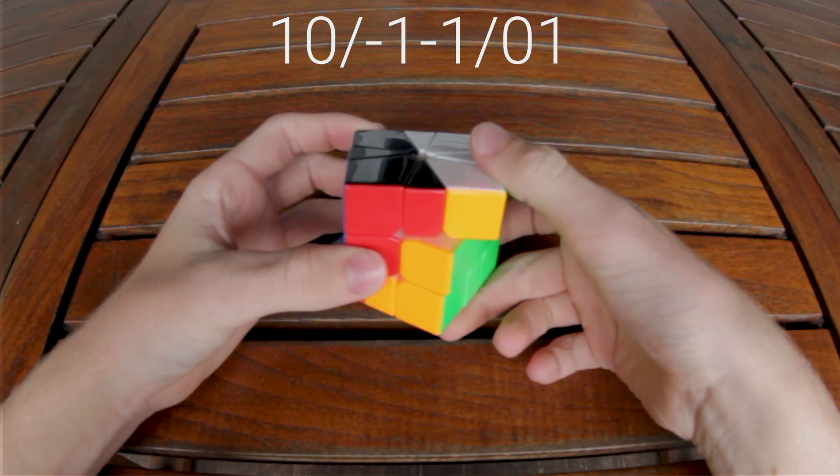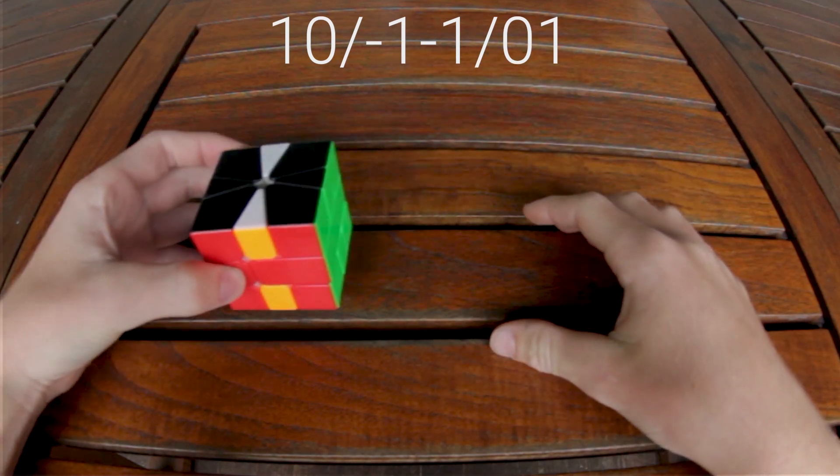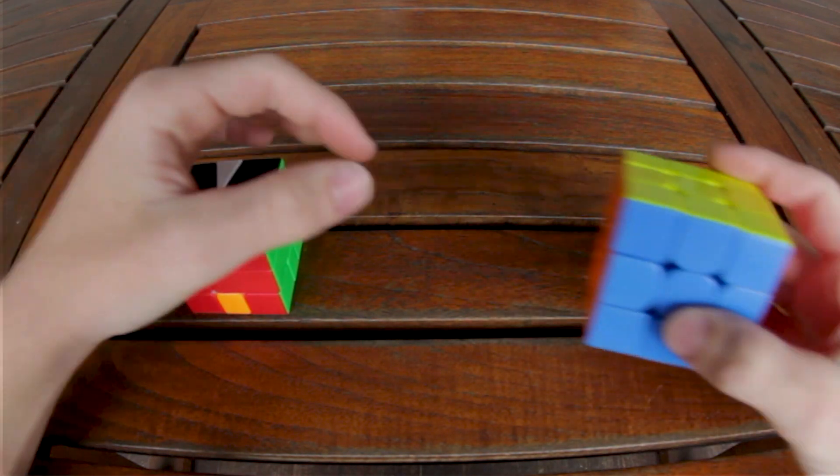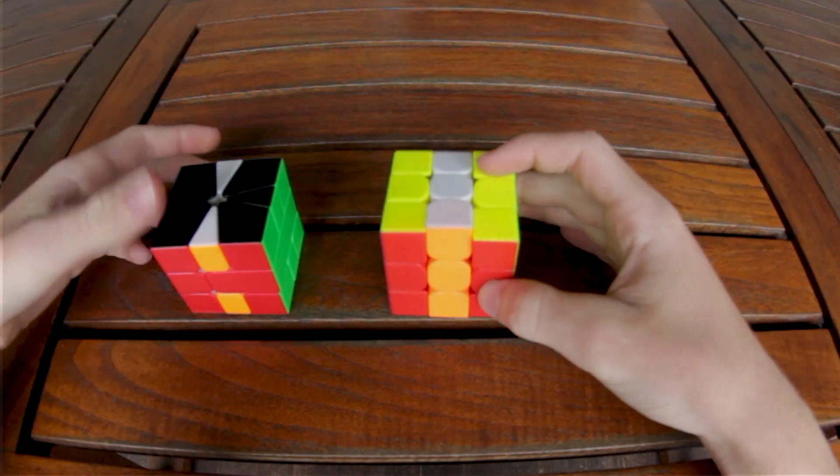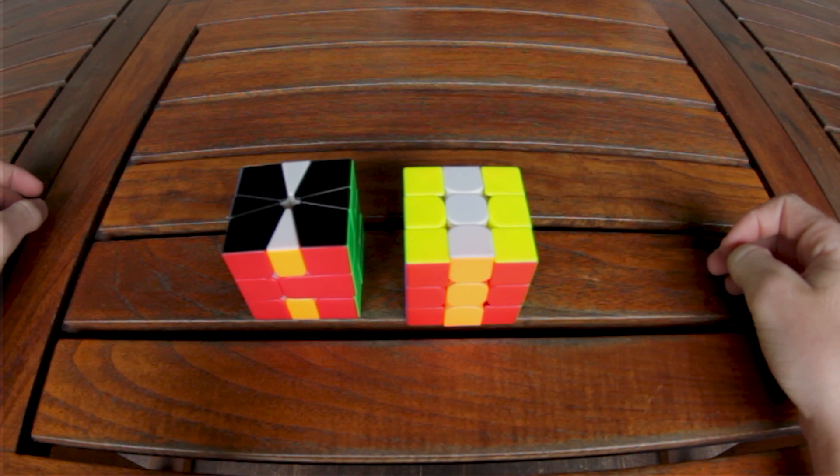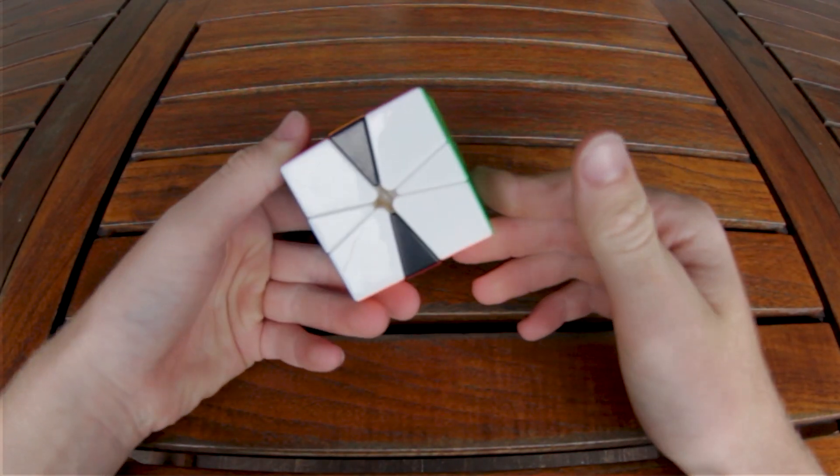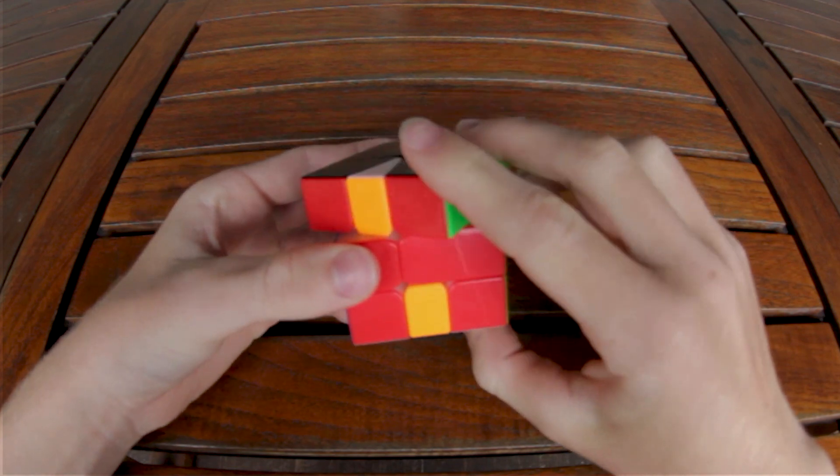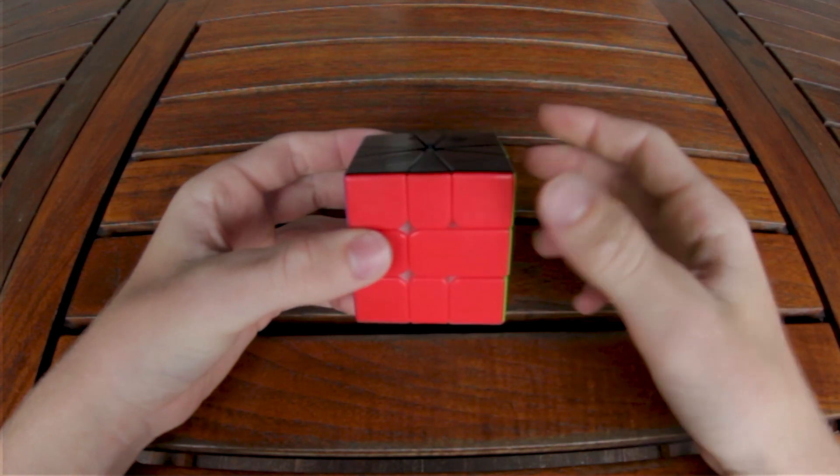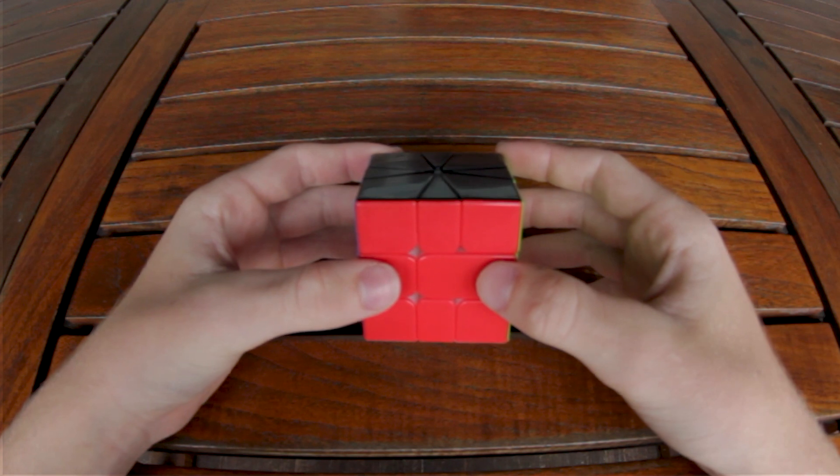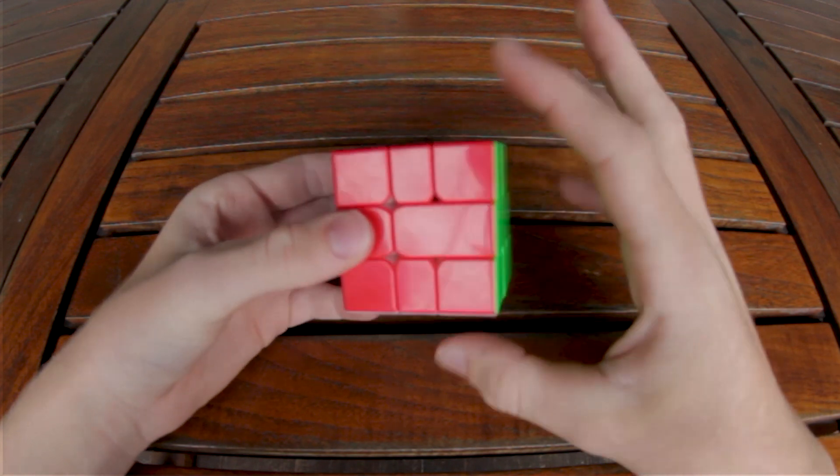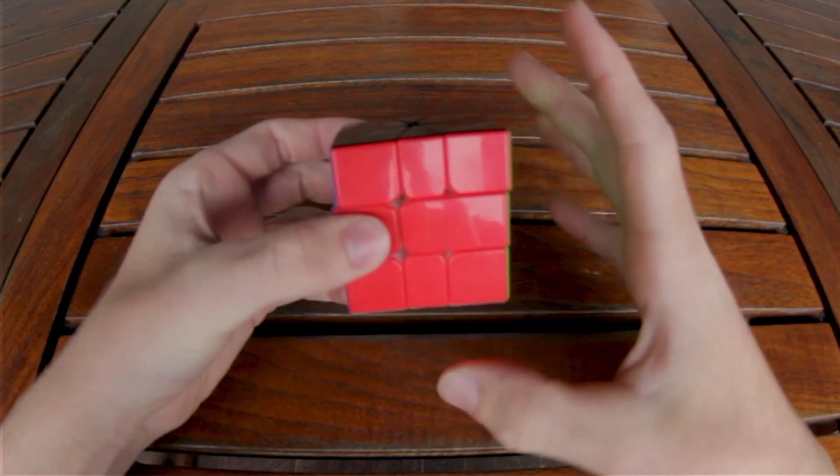The M2 move on Square-1 is a short trigger that simulates a similar pattern to M2 on 3x3. The move alone can be used to solve the double line edge orientation case. It can also come in handy in solving a few edge permutation algorithms. It's so useful because it's easy to memorize and fast to execute.